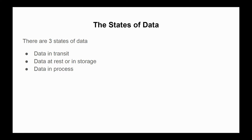There are three basic states of data: data in transit, data at rest, and data in process. Data at rest refers to data stored on a device or backup medium in any form. Data in transit is data that is currently traveling across a network. Data in use is data that is actively being processed and not simply stored on a hard drive or external storage.